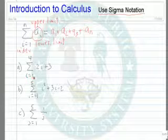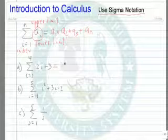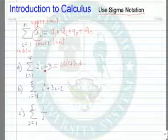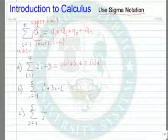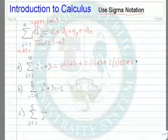Here i goes from 1 to 4, 2i plus 3. So first we put a 1 in for i, so we have 2 times 1 plus 3, plus we put 2 in for i, then we put 3 in for i, then we put 4 in for i.